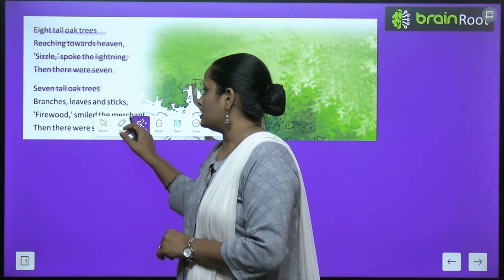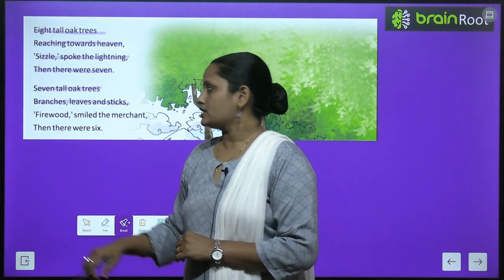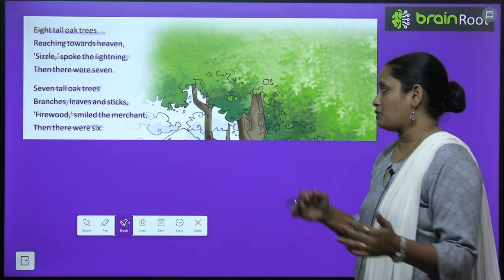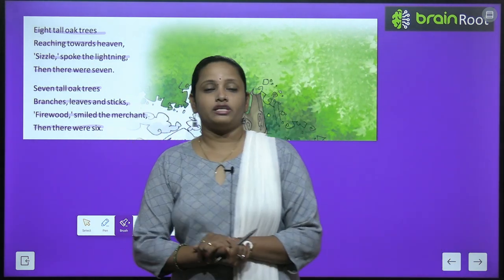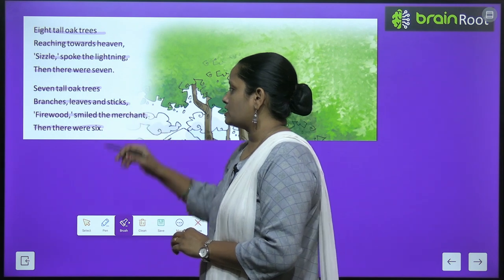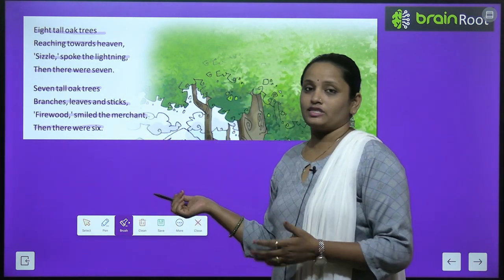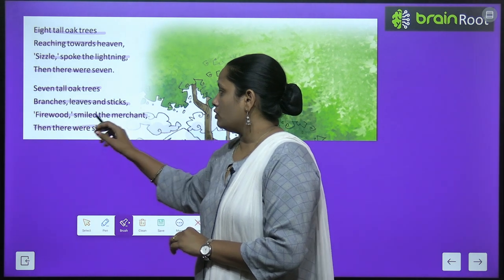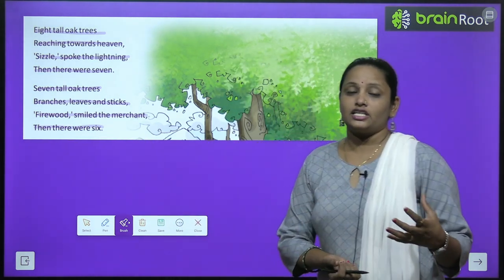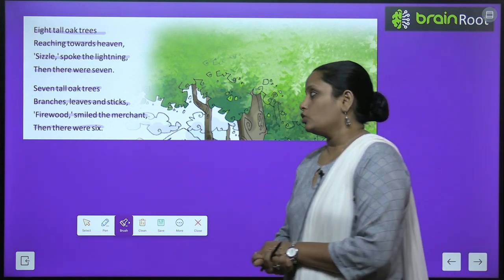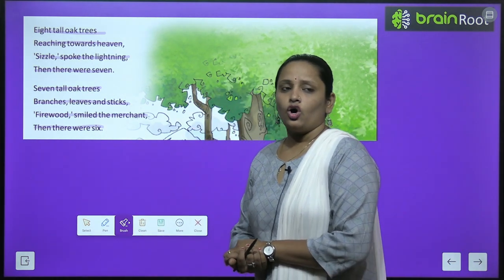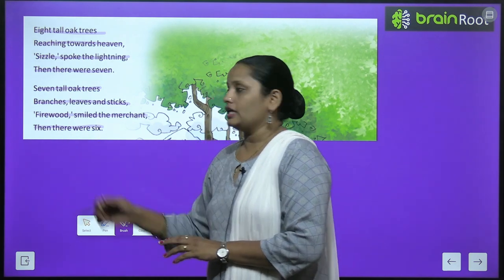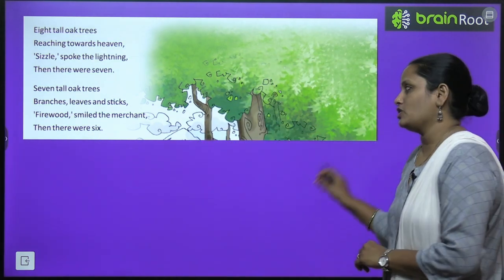'Seven tall oak trees, branches, leaves and sticks, firewood smiled the merchant, then there were six.' Seven tall oak trees میں بہت سارے branches، leaves اور sticks تھے۔ ایک merchant کو firewood چاہیے تھی آگ جلانے کے لیے، تو اس نے ایک پیڑ کاٹ دیا اور اسے firewood کے طور پر use کرنے لگا۔ Then there were six — چھ trees بچے۔